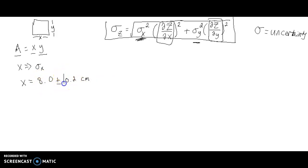So this 0.2 right here would represent the sigma. That 0.2 represents, or I'm sorry, 0.2 represents the uncertainty in the x value. So that is what would get plugged in right here.